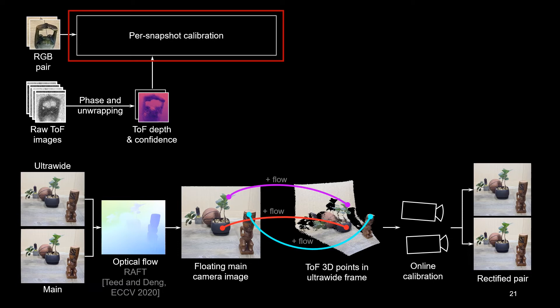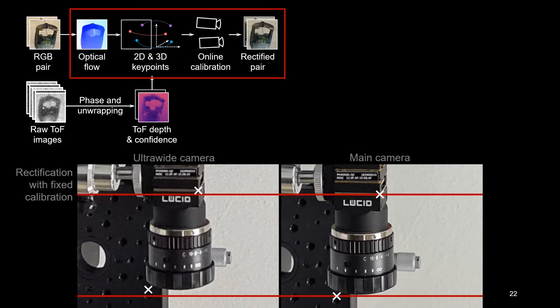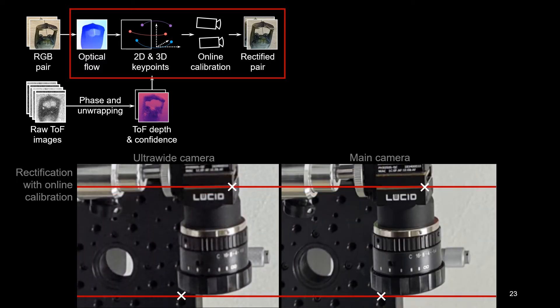That allows us to robustly estimate the main camera's extrinsics, intrinsics and distortion coefficients online. Here is the rectification error that we see with the fixed main camera calibration. It's around 10 pixels. And here is rectification after our online calibration, which removes the error and allows stereo depth estimation.